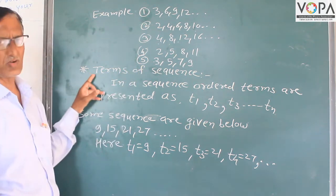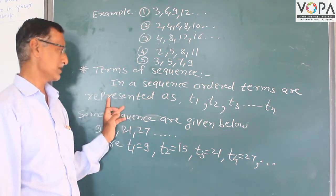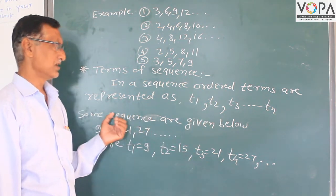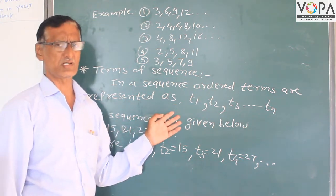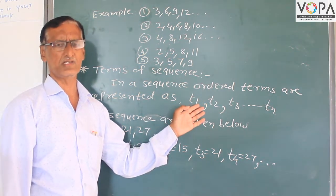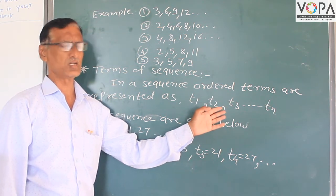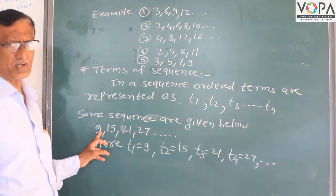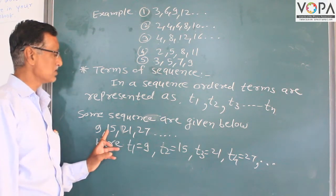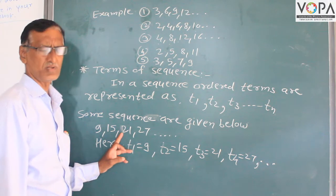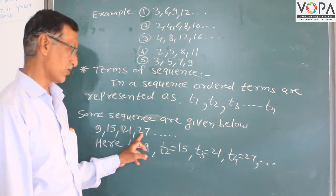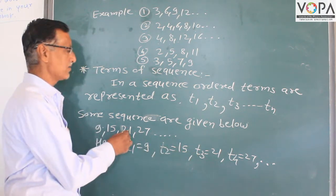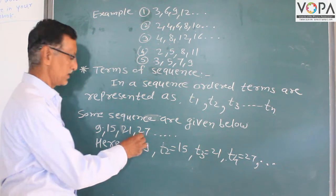The second topic is terms of a sequence. In a sequence, all terms are represented as T1, T2, T3. T1 is the first term, T2 is the second term, T3 is the third term, and so on. For the sequence 9, 15, 21, 27: T1 equals 9 (first position), T2 equals 15 (second position), T3 equals 21 (third position), and T4 equals 27 (fourth position).